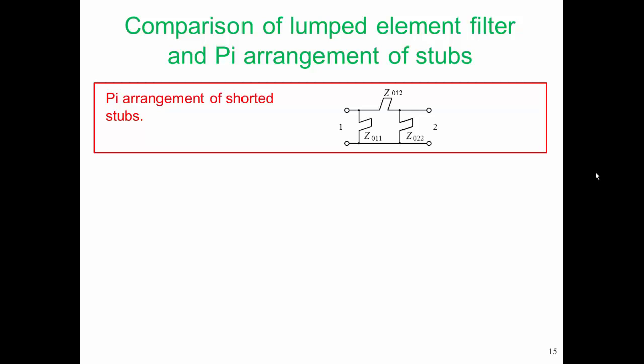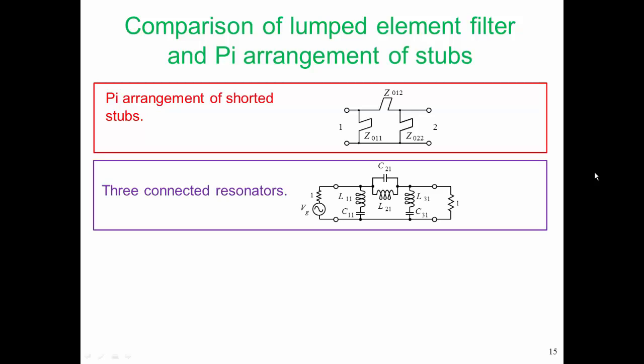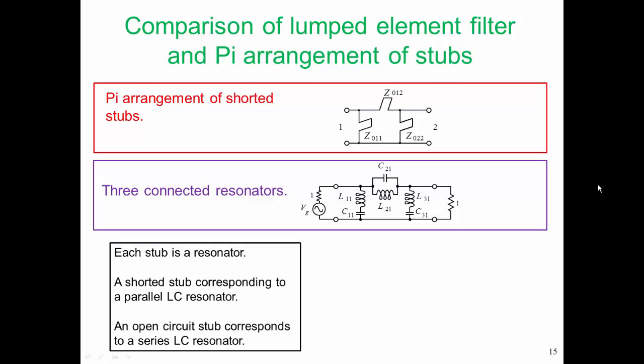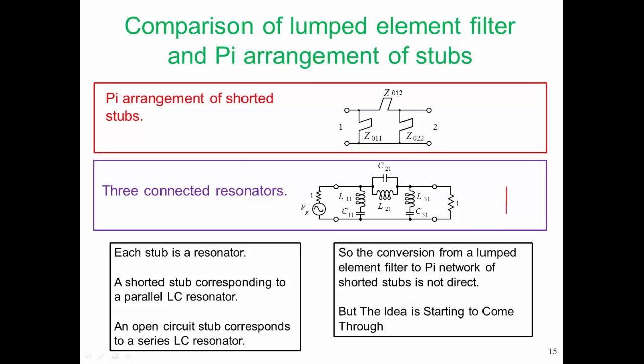Let's see where we are at the moment. We want to come up with this pi arrangement of shorted stubs. Here is our lumped element bandpass filter, and there are three resonators. So far, so good. The pi arrangement of stubs is an arrangement of three resonators. Our bandpass filter has three resonators. Each stub is a resonator, but here is the problem. A shorted stub corresponds to a parallel LC resonator, and an open circuited stub corresponds to a series LC resonator. So a direct implementation of this lumped element circuit using stubs will not arrive at three shorted stubs. The conversion from a lumped element filter to a pi network of shorted stubs is not direct, but the idea is starting to come through.